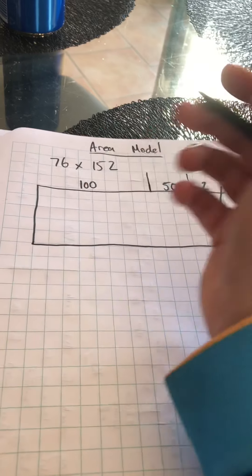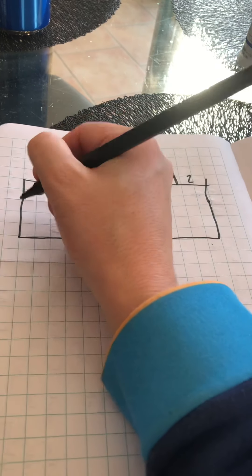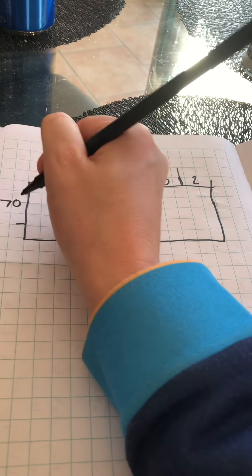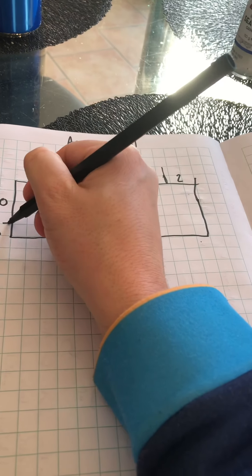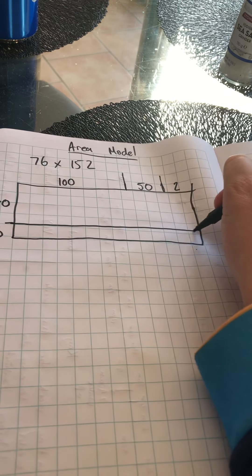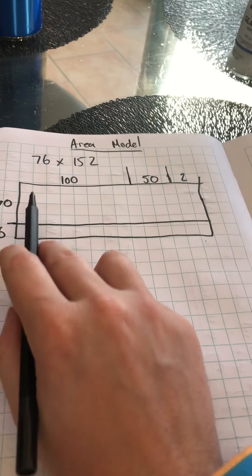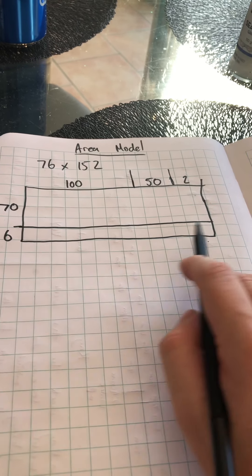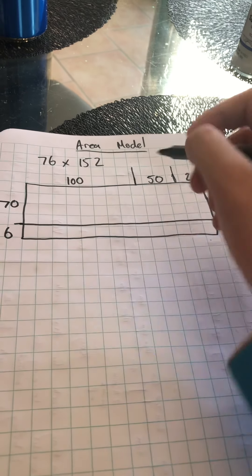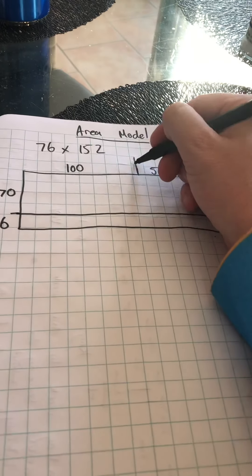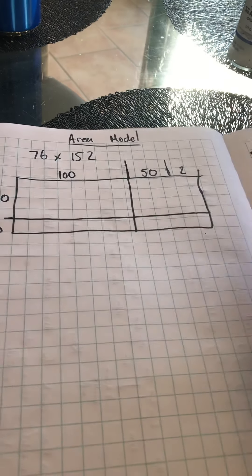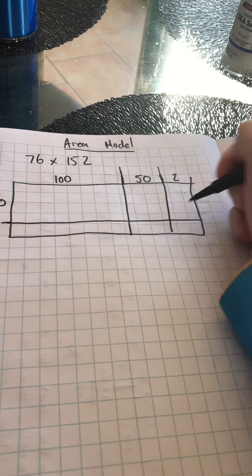Along this side here is going to be the smaller number, so I'm going to split it into its place value being 70 and 6. Now I'm going to create some lines going across there. The 100 and 52 I've split three times, so I'm going to go along here, split it there and along here, and split it there as well.